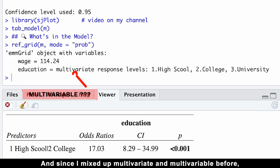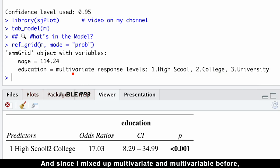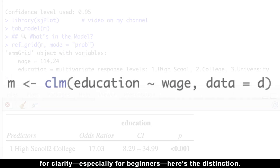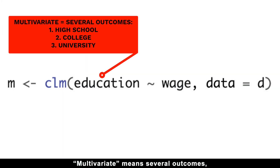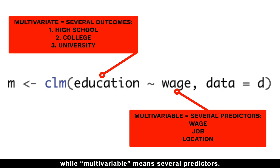And since I've mixed up multivariate and multivariable before, for clarity — especially for beginners — here is the distinction: multivariate means several outcomes, while multivariable means several predictors.